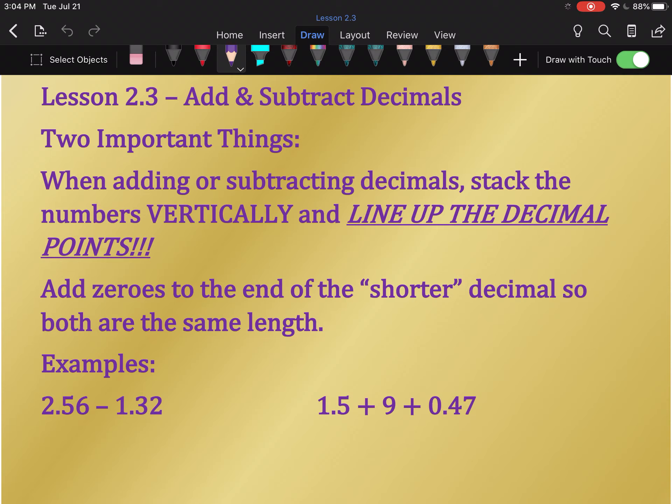Now, what this will often cause to happen are gaps in numbers. What I mean by that is not both numbers will be the same length. And that's not a big deal. We just add zeros to the end of the shorter decimal, and by shorter I mean whichever one doesn't go all the way, so that both numbers are the same length.